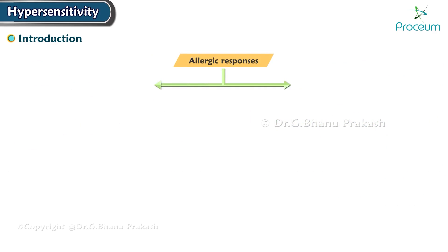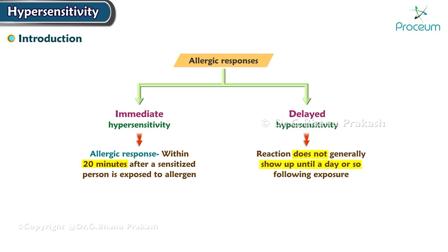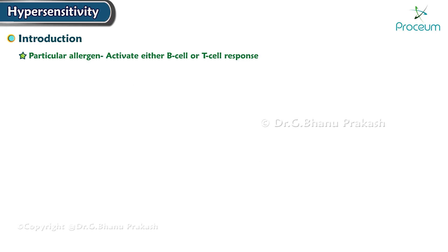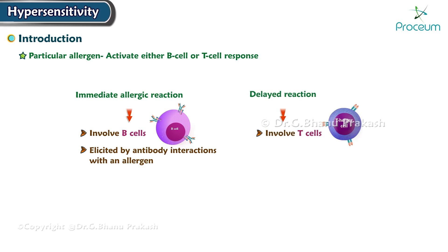Allergic responses are classified into two categories: immediate hypersensitivity and delayed hypersensitivity. In immediate hypersensitivity, the allergic response appears within about 20 minutes after a sensitized person is exposed to an allergen. In delayed hypersensitivity, the reaction does not generally show up until a day or so following exposure. The difference in timing is the result of the different mediators involved. A particular allergen may activate either a B cell or a T cell response. Immediate allergic reactions involve B cells and are elicited by antibody reactions with an allergen, while delayed reactions involve T cells and the more slowly responding process of cell-mediated immunity against the allergen.